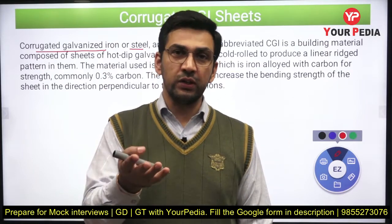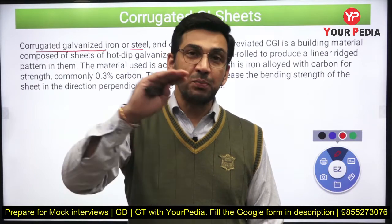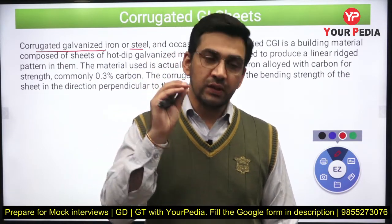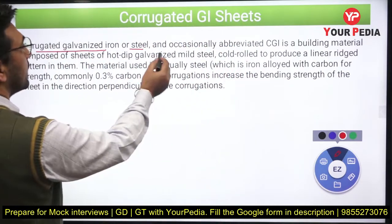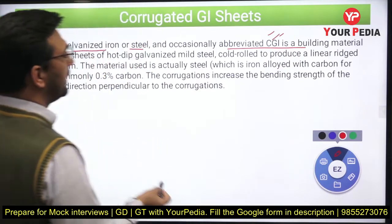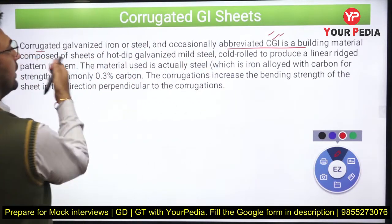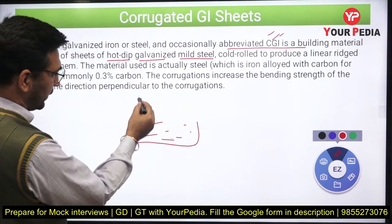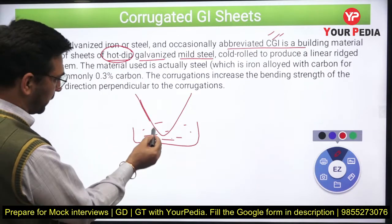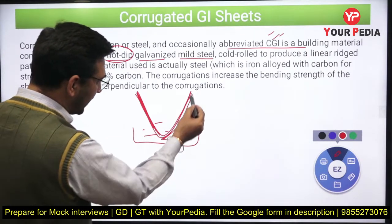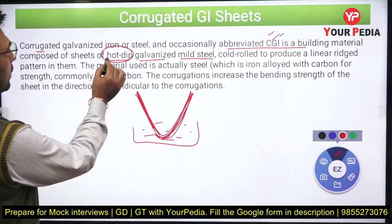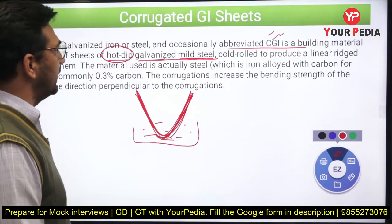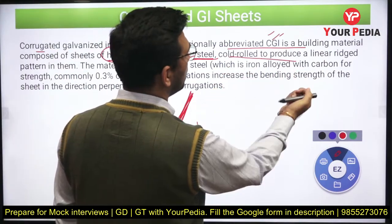Sometimes we have a misconception — in common terminology we call it a tin shed or tin sheet, but tin is a very weak material. It is not a tin sheet. It may appear to have a color resembling tin, but it is a steel sheet coated with zinc. It is occasionally abbreviated as CGI — corrugated galvanized iron — a building material composed of sheets of hot-dip galvanized mild steel. Hot-dip means you have dipped the sheet into a bath of molten zinc.